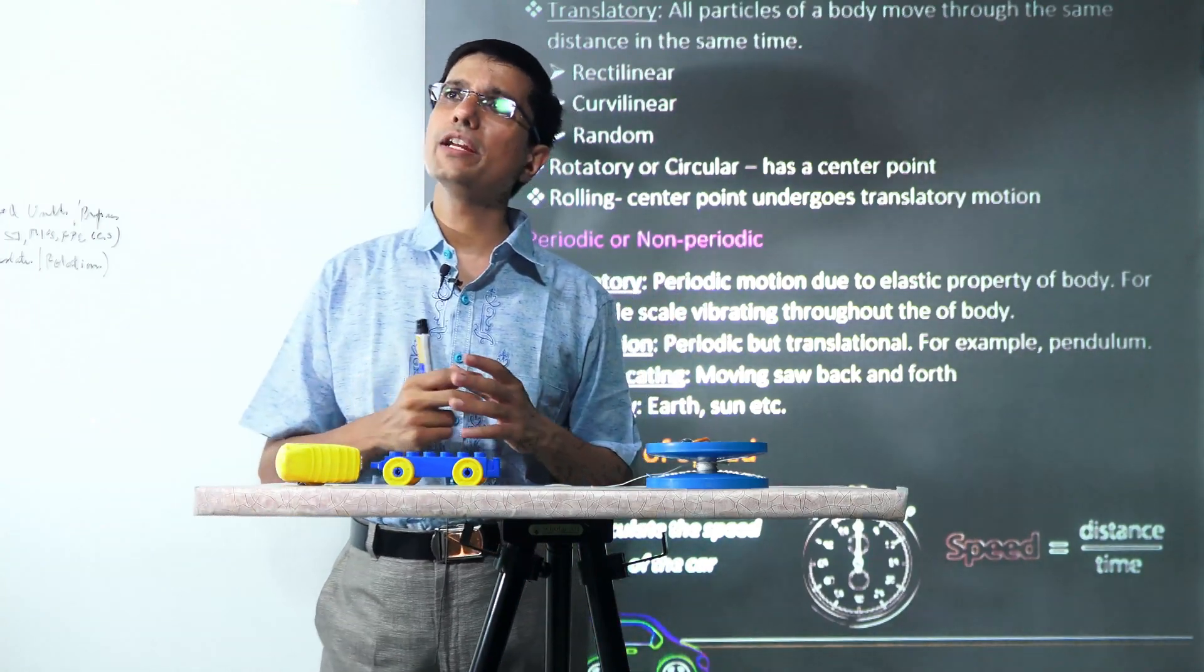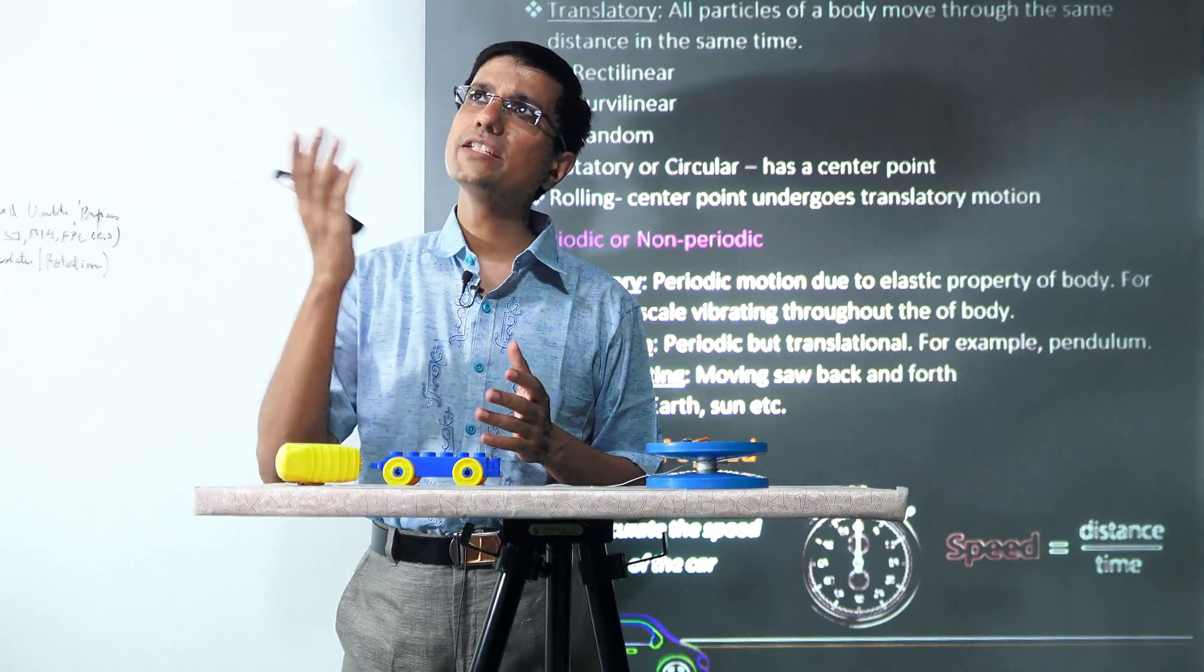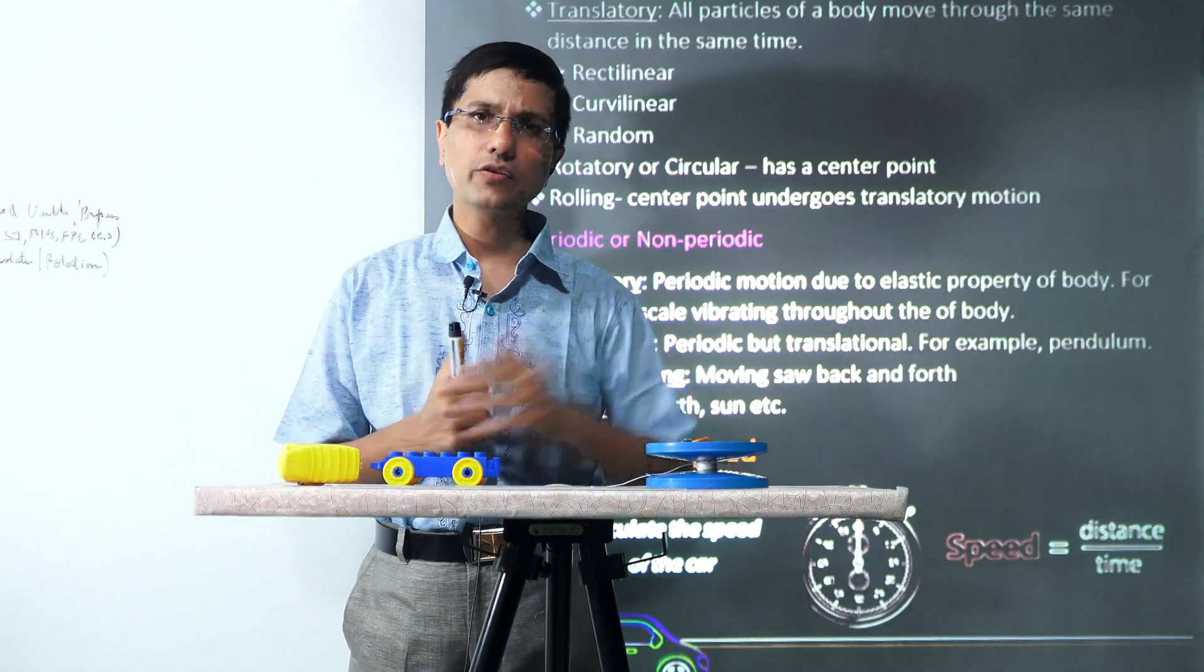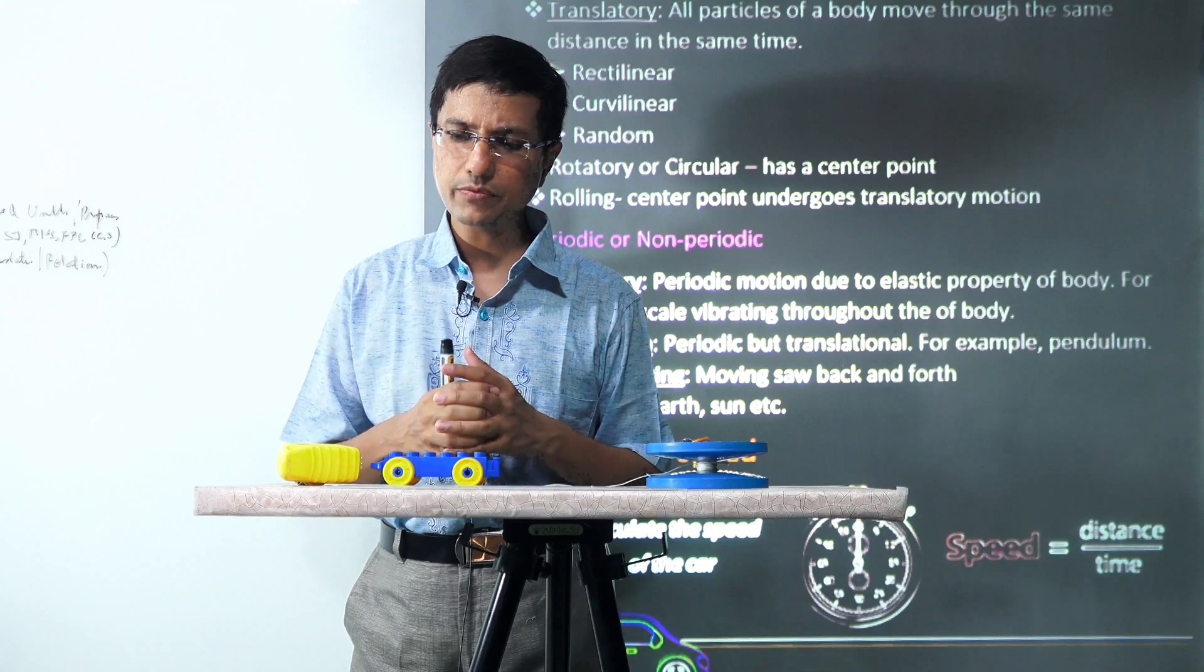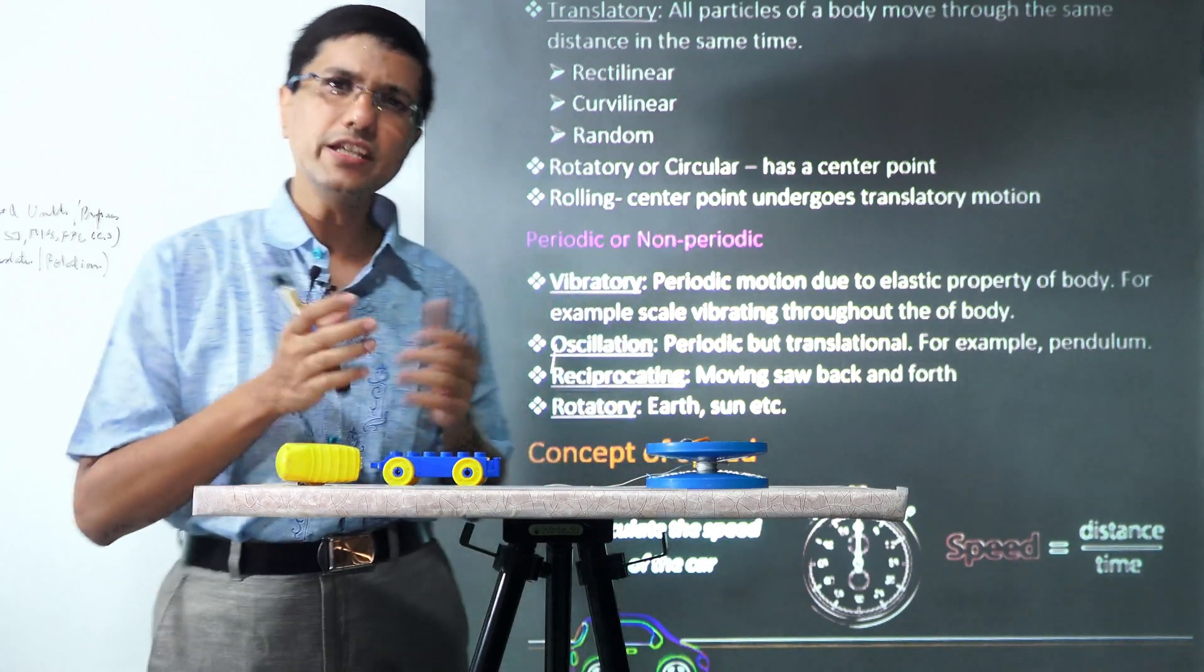There are various things moving in our world. For example, if you look around you there is a fan which is moving, there are cars running on the road. What are these motions? Can we classify these motions into certain kinds? Yes we can.